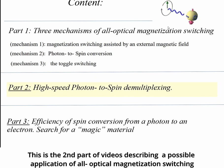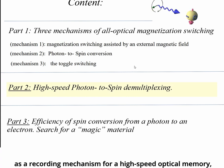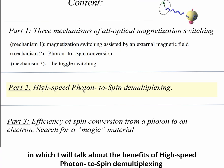This is the second part of a video series describing a possible application of all-optical magnetization switching as a recording mechanism for high-speed optical memory, in which I will talk about the benefits of high-speed photon-to-spin demultiplexing.